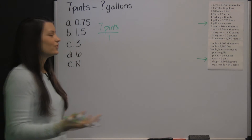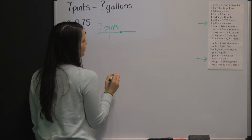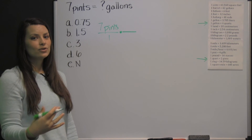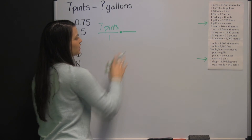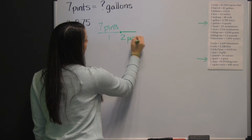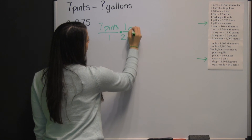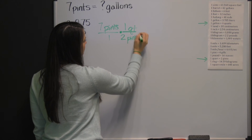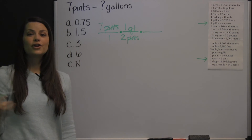We'll start with the first conversion: one quart is two pints. We're going to multiply times that conversion factor, making sure that our units are in diagonal positions so that when we multiply the fractions, we can cross-cancel the units. So we're going to put our two pints in the denominator so that those will cross-cancel, and our one quart goes in the numerator. When we multiply, our pints cross-cancel.